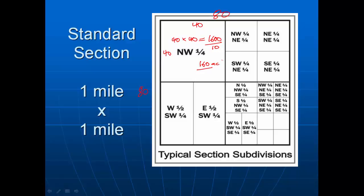These things break down even further. Forty acres is a quarter mile by quarter mile, or twenty chains by twenty chains. So if you're ever wondering how big forty acres is, it's a quarter mile by quarter mile, or twenty chains by twenty chains.